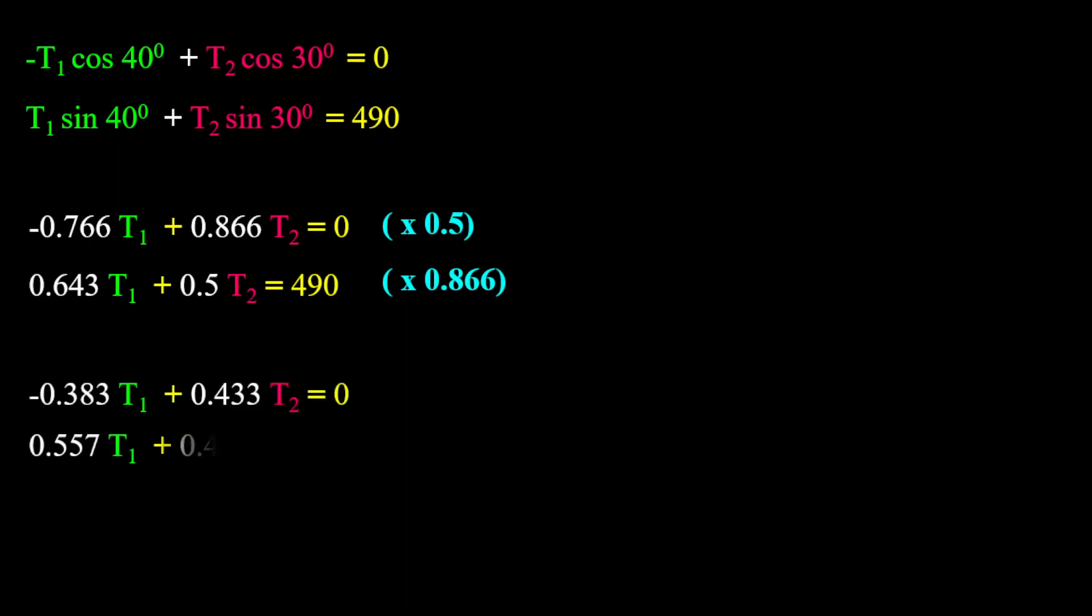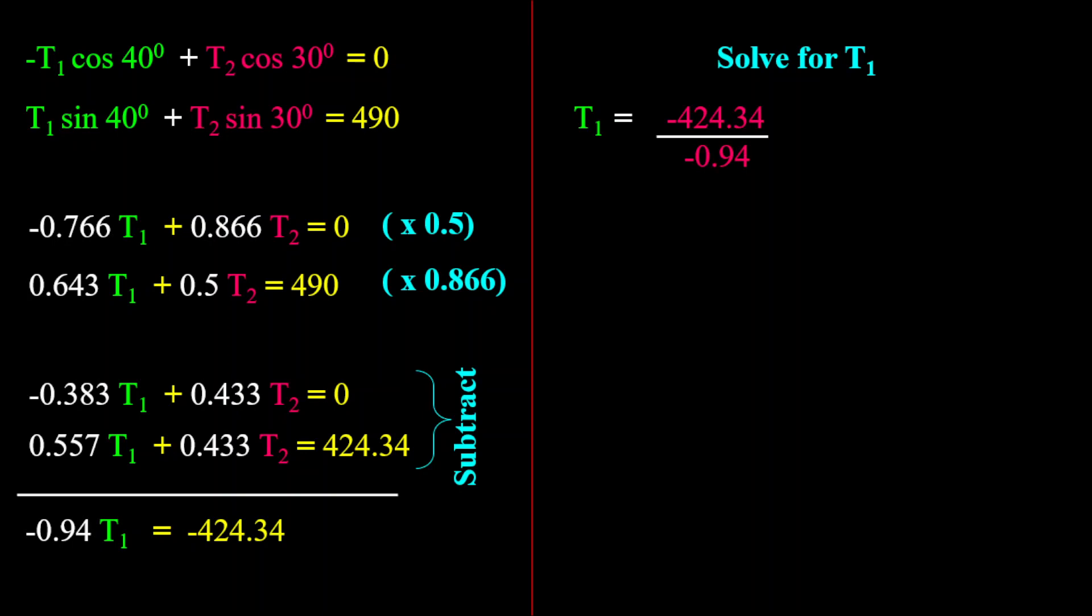Once you have done that, notice that T2 they are equal and so we can subtract the equation from the bottom one from the top one. What you get as a result is negative 0.94 T1 equals to negative 424.34. Now from this we can find T1 quite easily. Therefore T1 equals to minus 424.34 divided by negative 0.94 and so the answer is 451.43 newtons.